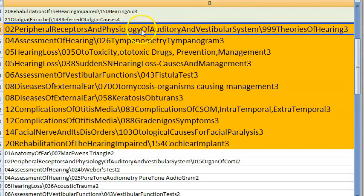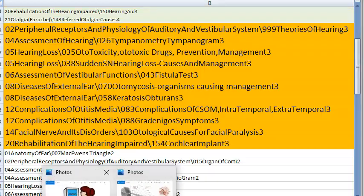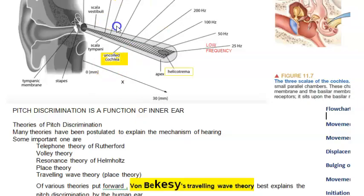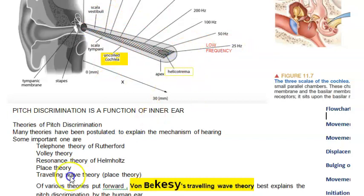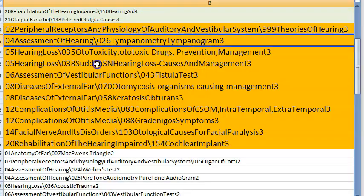Second priority in ear: theories of hearing. The traveling wave theory — tonotopical mapping — low frequency at one end. Von Békésy's traveling wave theory should be known. Then tympanometry — tympanogram — this comes under assessment of hearing, under objective tests, specifically impedance audiometry.